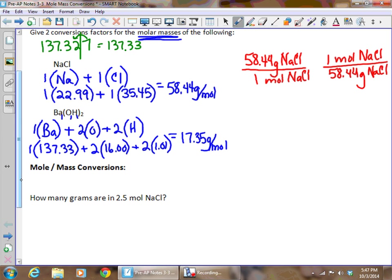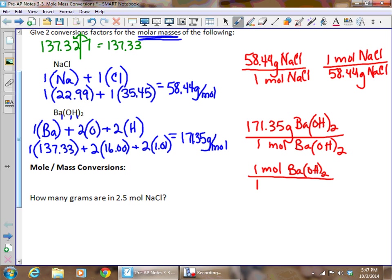Once again, this can be written as a conversion factor. As a complex unit, I can say, whoops, I didn't quite write that right, did I? So that should be 171.35. So as a conversion factor, I can write this as 171.35 grams of barium hydroxide per one mole of barium hydroxide. I'm going to write this directly below it. I can say this upside down, flip it, and say that one mole of barium hydroxide means that I've got 171.35 grams. So those are my two conversion factors for the molar mass of barium hydroxide. And we're going to use those conversion factors in the problems below where we're converting from moles to grams and grams to moles.